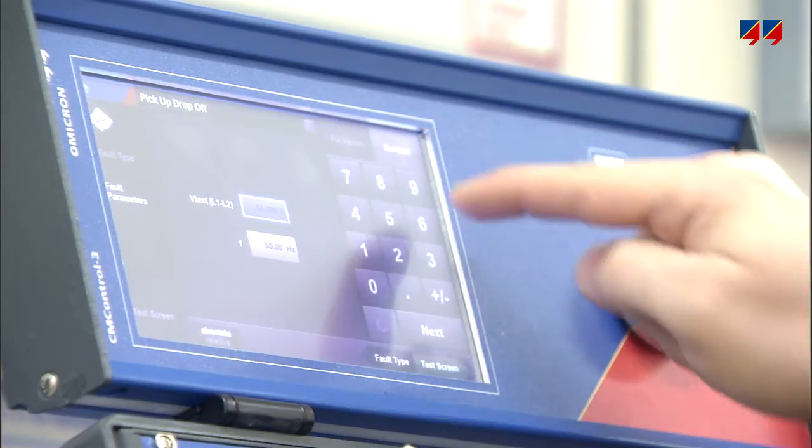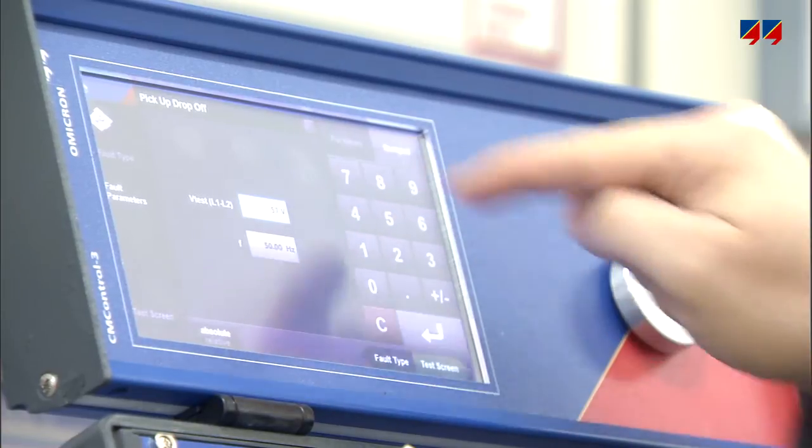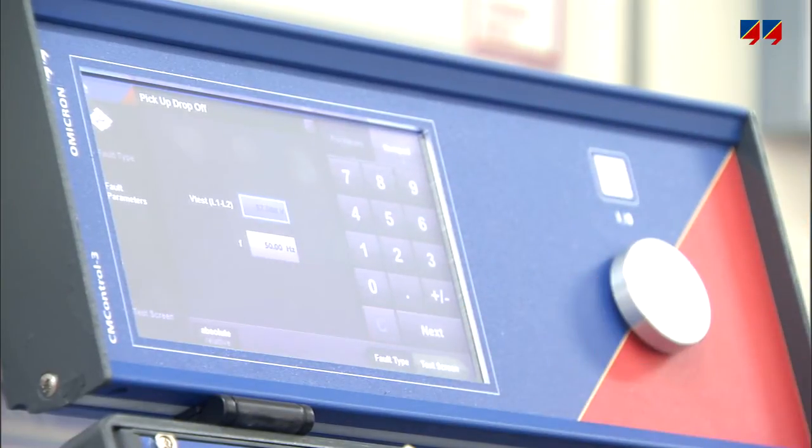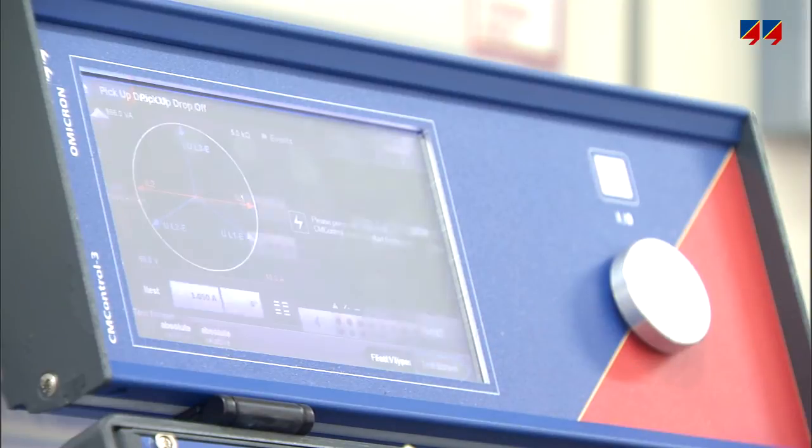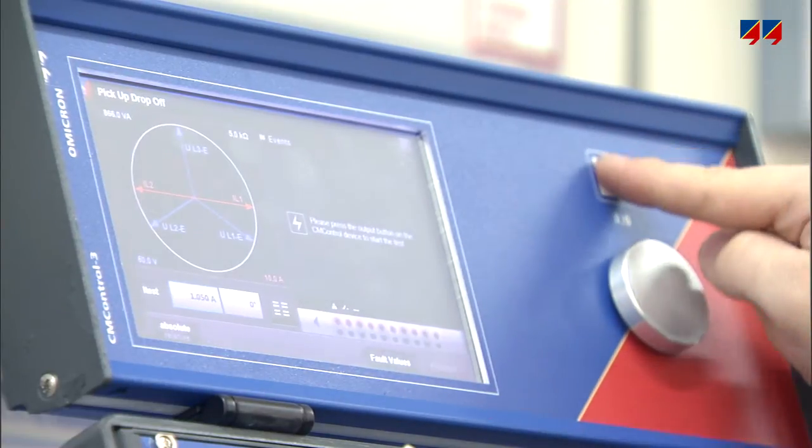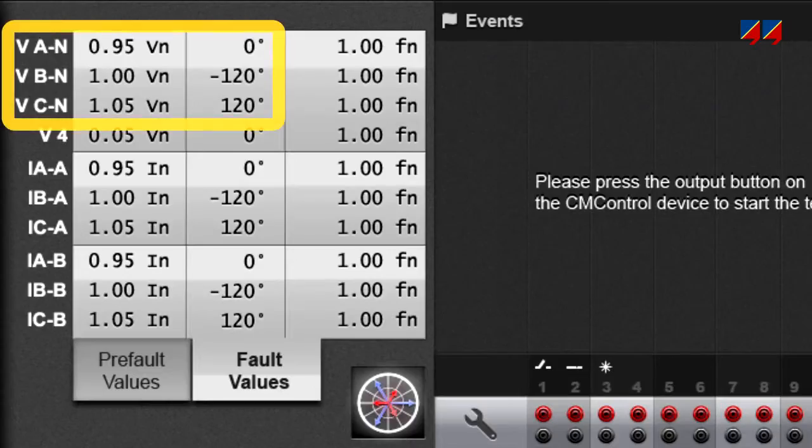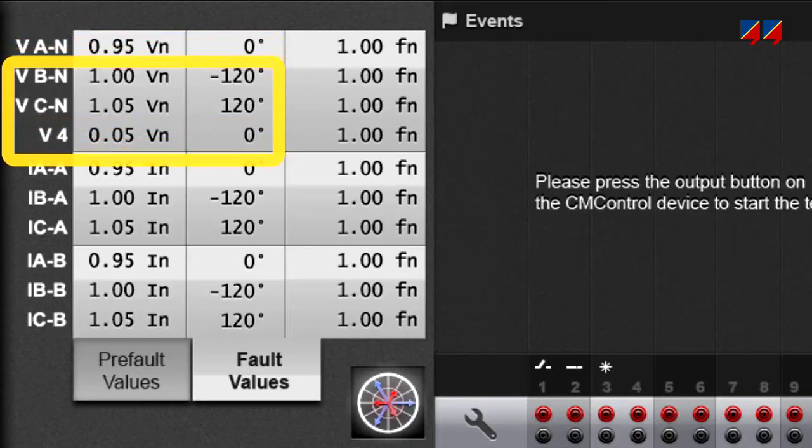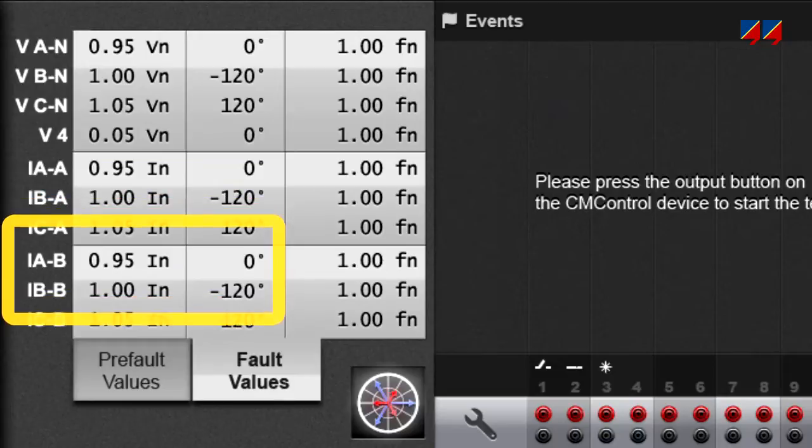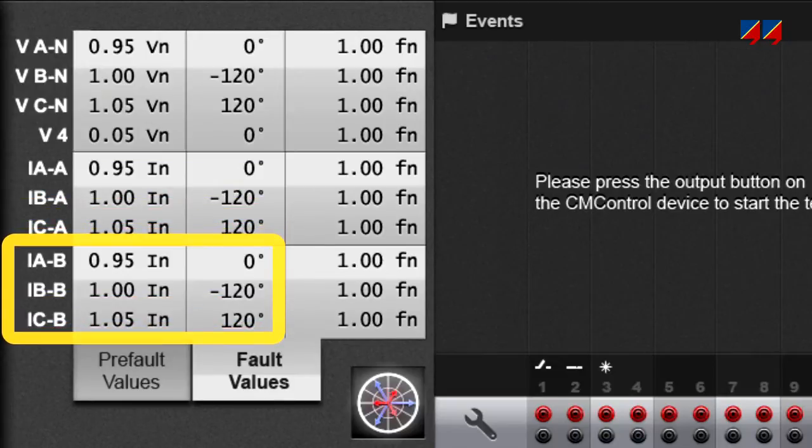It is ready for operation within seconds. A touch panel user interface allows the user to control the output of voltages and currents and to measure trip times and thresholds. It can be used efficiently to just inject voltages and currents to check wiring, for instance in SCADA applications.